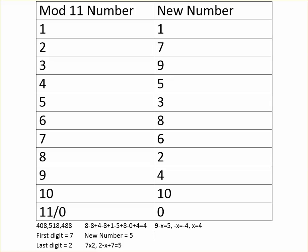So the cube root of 408,518,448 equals 742. Let's go over the steps one more time: the first digit is 7, the last digit is 2 — that's straightforward from the chart. Then the mod 11 calculation working right to left gives us 4, which converts to 5 in the table. We plug into the formula — last digit minus x plus first digit equals new number — which gives x = 4, so the middle digit is 4, and the answer is 742.